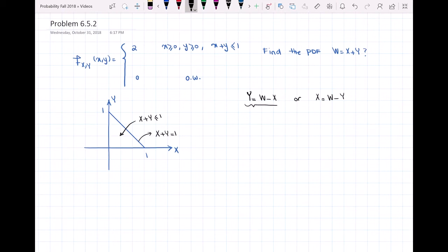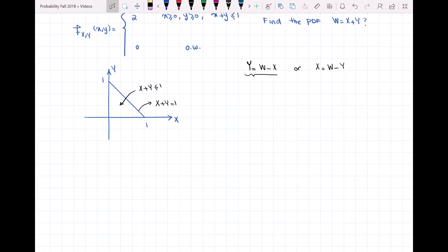What I need to do is find the integral from negative infinity to infinity of F_XY of X, and instead of Y, I'm going to have W minus X, dX. This will give me the PDF of W.